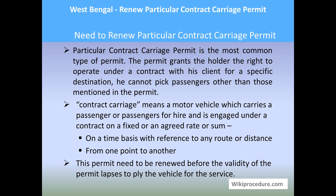Once you have this permit and the vehicle, you cannot carry passengers other than those mentioned in the permit. Contract carriage means a motor vehicle which carries a passenger or passengers for hire, engaged under contract on a fixed or agreed rate, or on a time basis, with reference to any route or distance — for example, morning hours, evening hours, Saturdays off — from one point to another with the route mentioned. This permit needs to be renewed before the validity lapses to continue using the vehicle for the service.